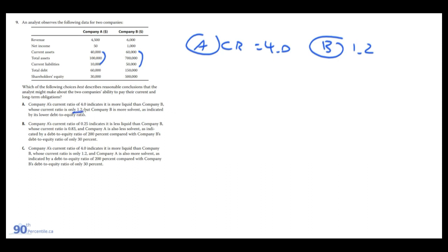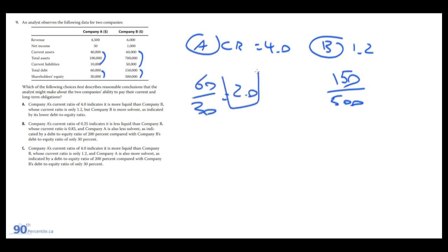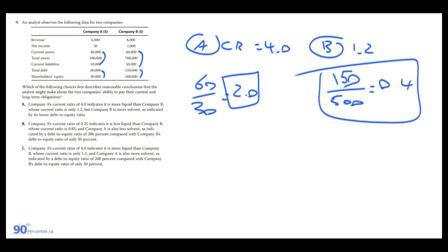Company A has a current ratio of 4.0, which confirms it's more liquid than Company B at 1.2, because it has more current assets to fund current liabilities. Company B is more solvent as indicated by its lower debt-to-equity ratio — it has significantly less debt on its books relative to equity. So A is our answer; we got lucky here and didn't have to work all the way down the list.